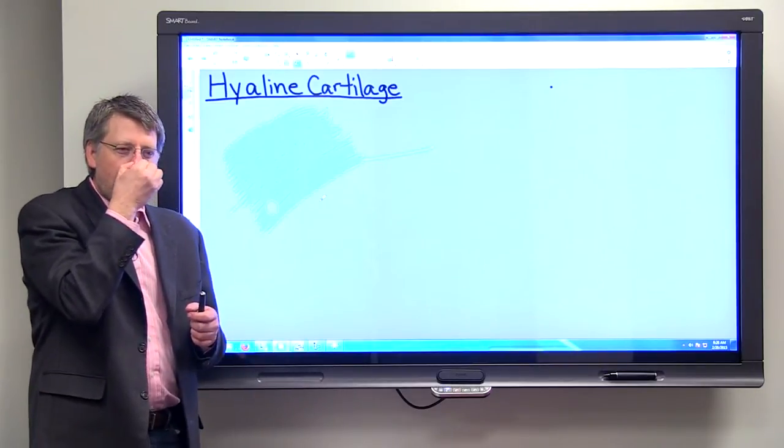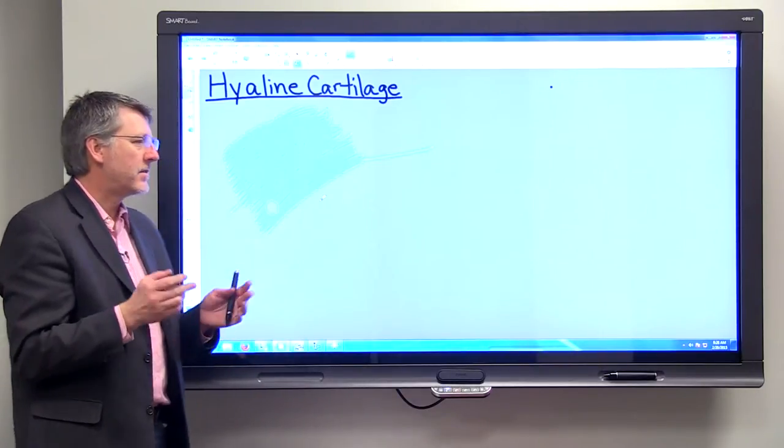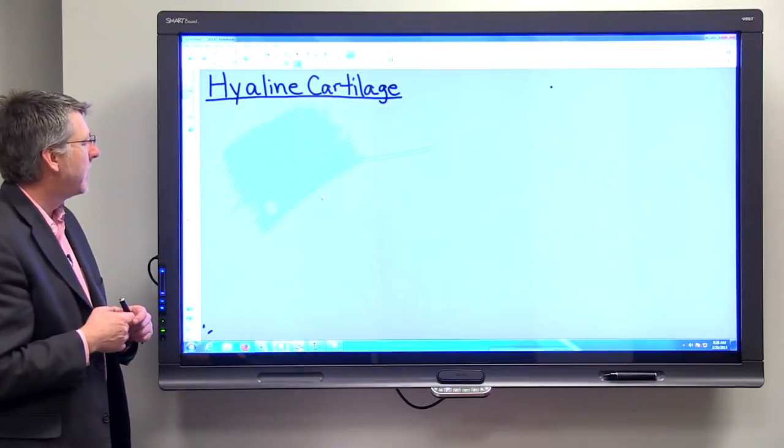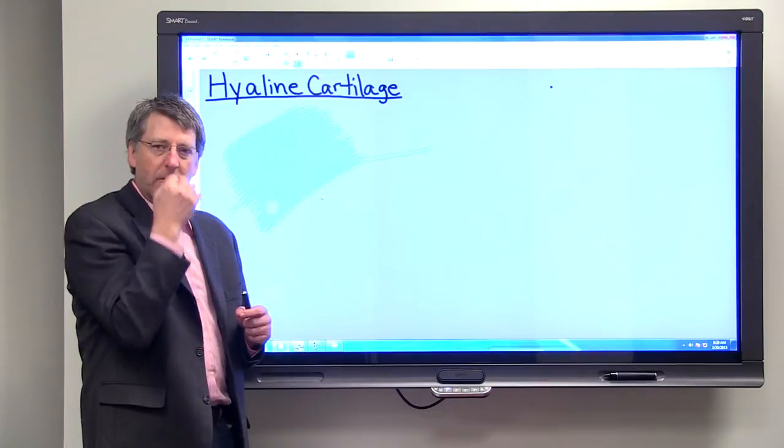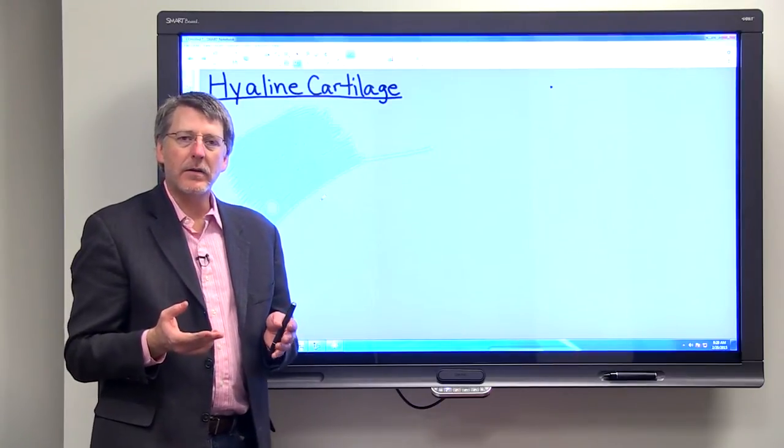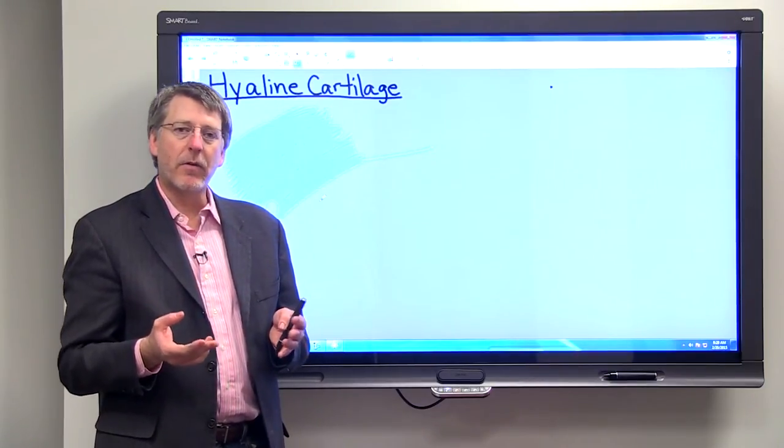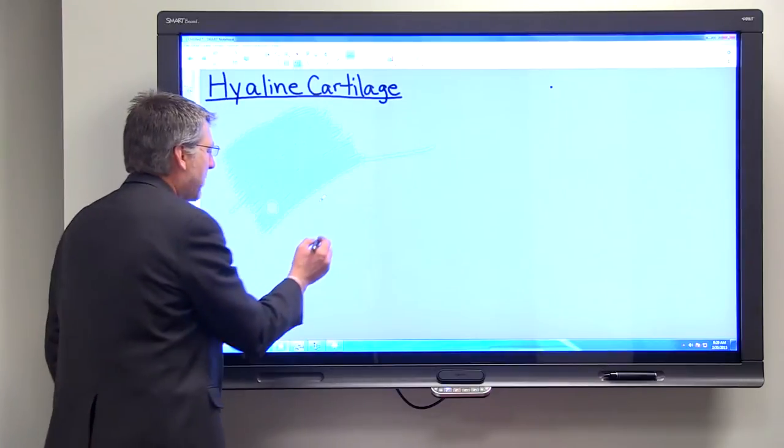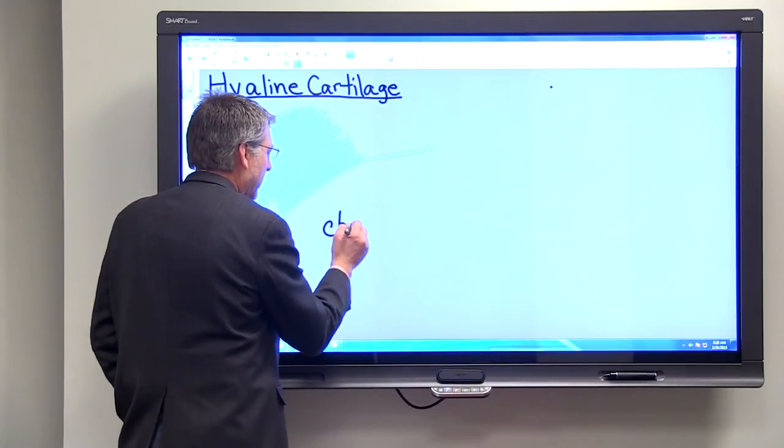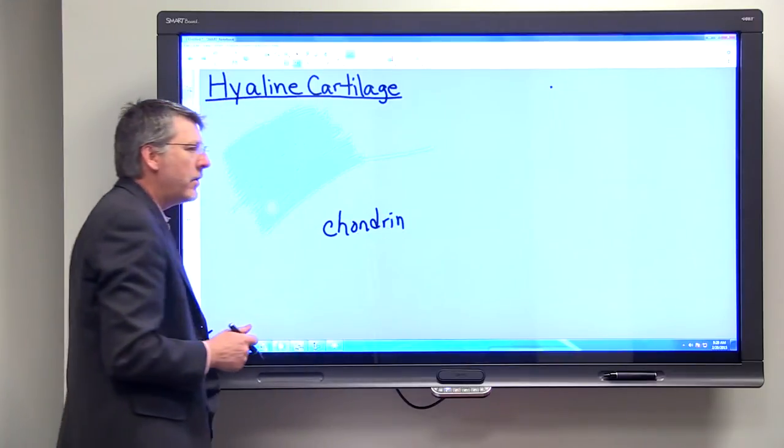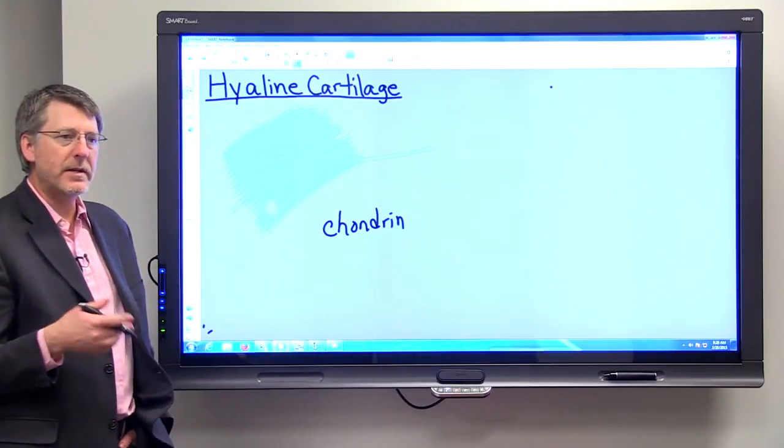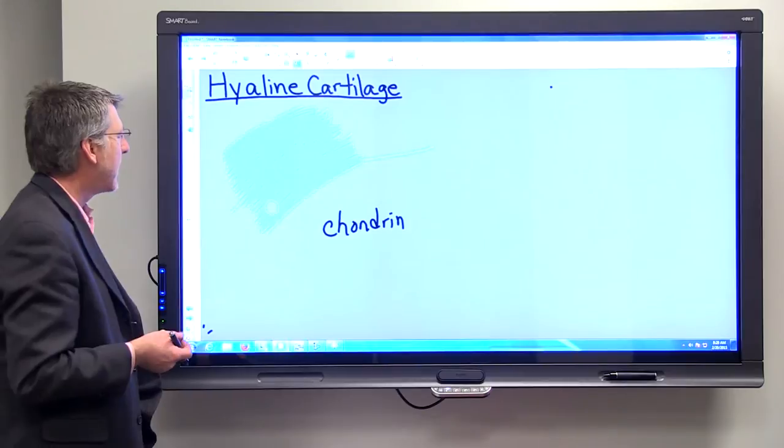And if you squeeze that and pull on it, you can tell that it's a pretty tough piece of tissue, but at the same time it's very flexible. And that's because hyaline cartilage has a semi-solid ground substance made up of something called chondrin. So chondrin is the name of that semi-solid ground substance in hyaline cartilage.